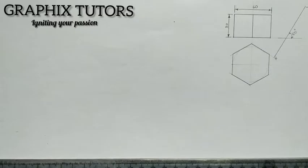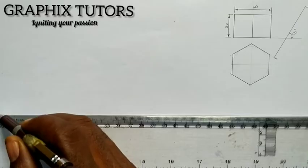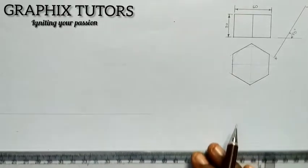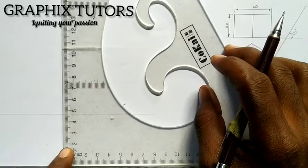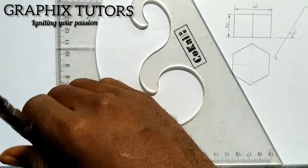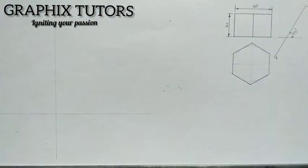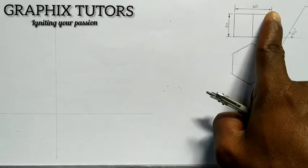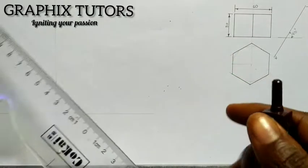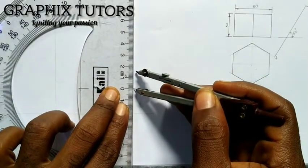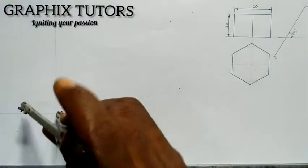First of all, I'm going to draw my horizontal line this way, and I'm going to draw my vertical line this way. This is where they are meeting. The next thing I'll do is to draw this circle. From here to here is 60, so I'll take half of it, which is 30. I'll measure 30 and place it here.